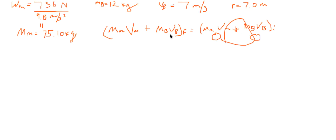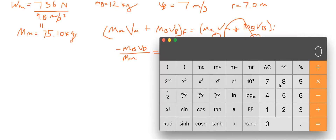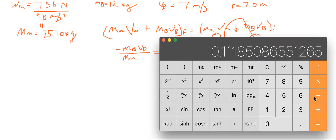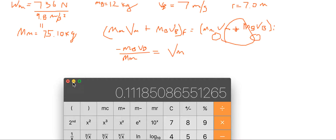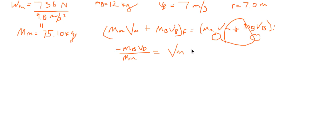So you can subtract the mass of the book times the velocity of the book over, giving you negative mb times vb divided by the mass of the man to get the velocity of the man. That's 1.2 for the mass of the book times the velocity of the book which is 7 meters per second, divided by 75.1, times negative 1, giving us negative 0.112 meters per second.